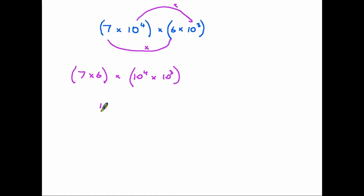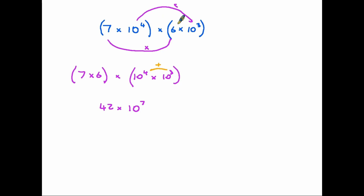Seven times six is forty-two. If you are familiar with how we multiply powers, the rule is to simply add the two powers together. So ten to the four times ten to the three gives us ten to the power seven — four plus three equals seven. We multiply the two numbers together in the normal way and add the two powers together, giving forty-two times ten to the seven.